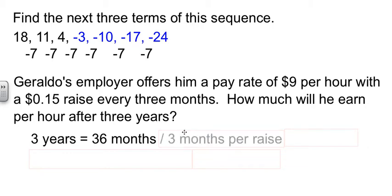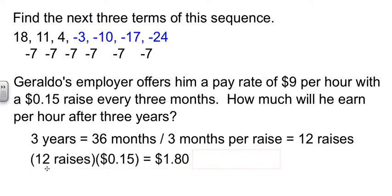Our 36 months divided by three months for every raise means he's going to get 12 raises over that period of time. Well, if I take the 12 raises times 15 cents every time he gets a raise, that's $1.80. What should we do with this $1.80? Add it back to the $9 he started from and that will give you his final pay of $10.80. That doesn't sound too bad.